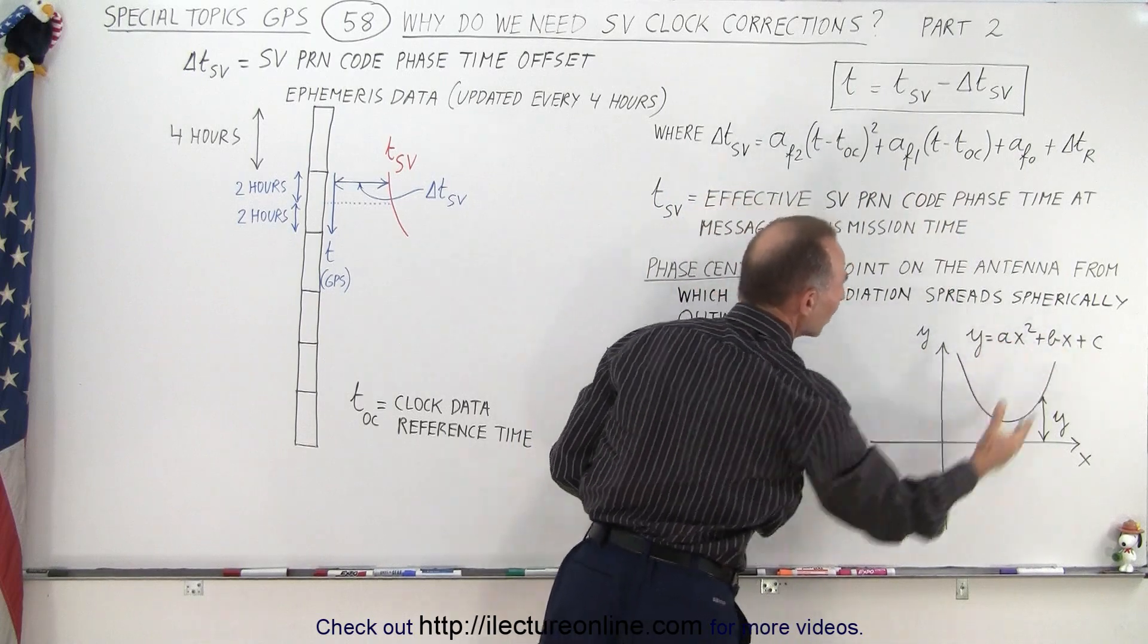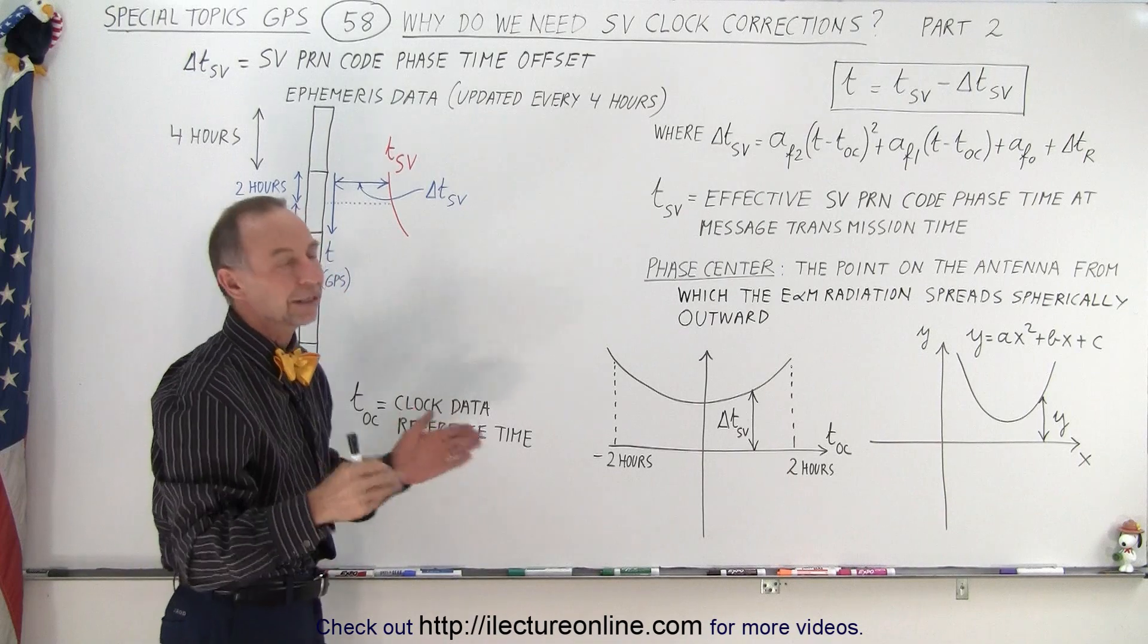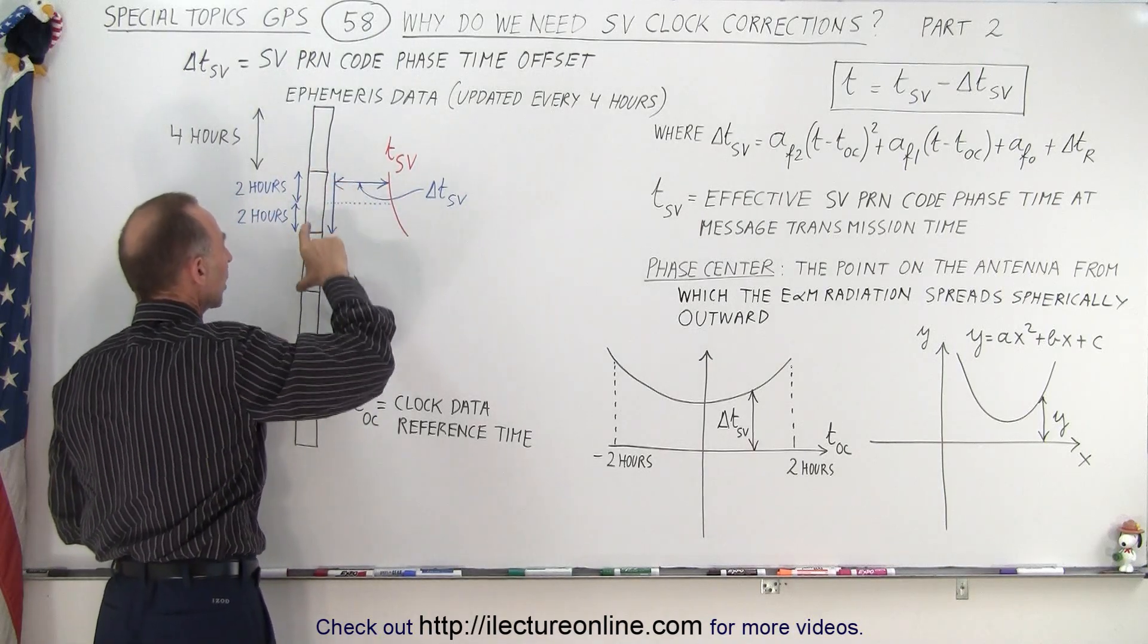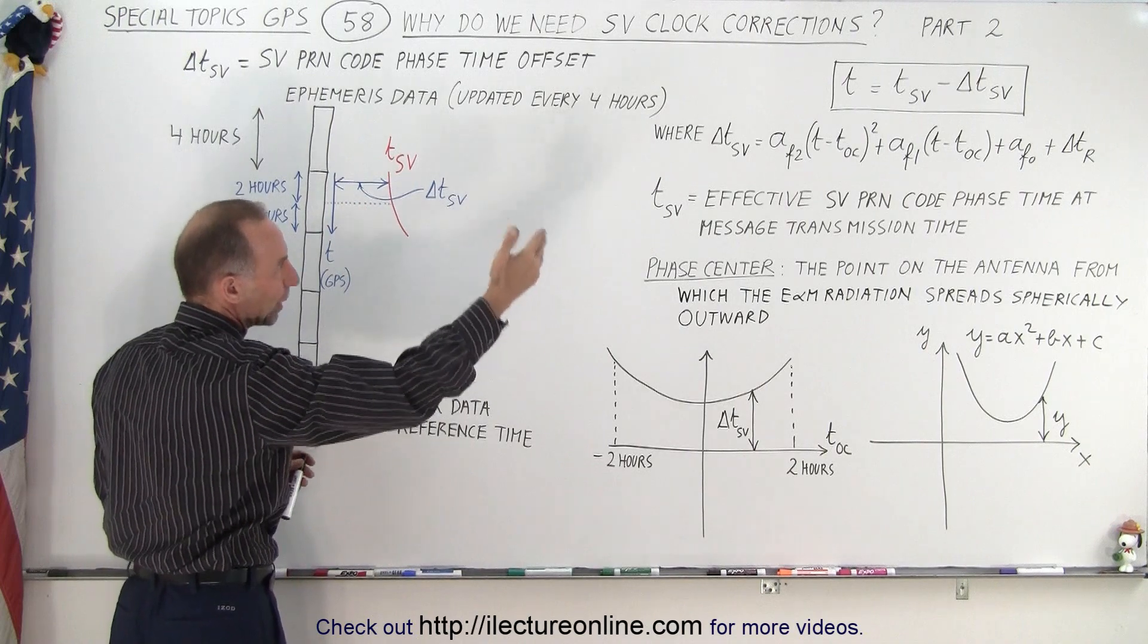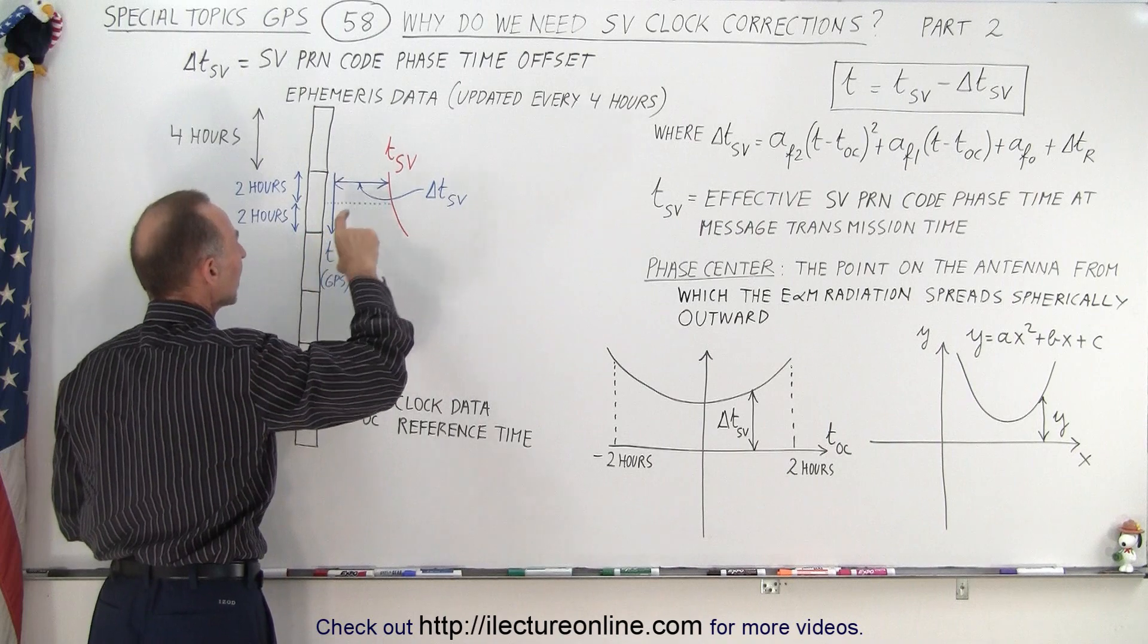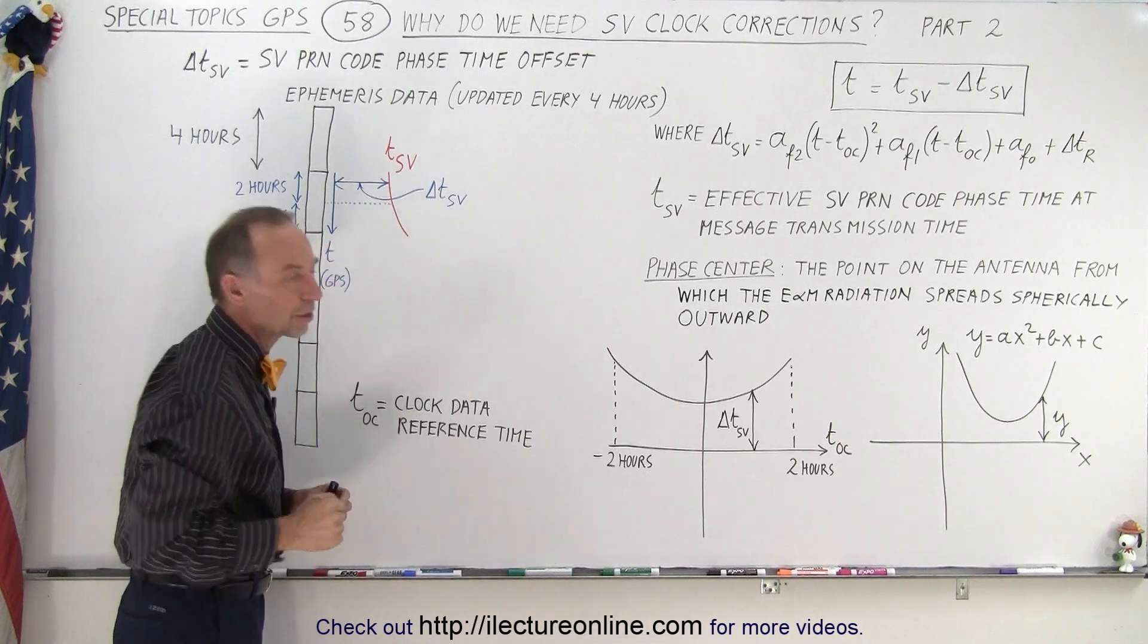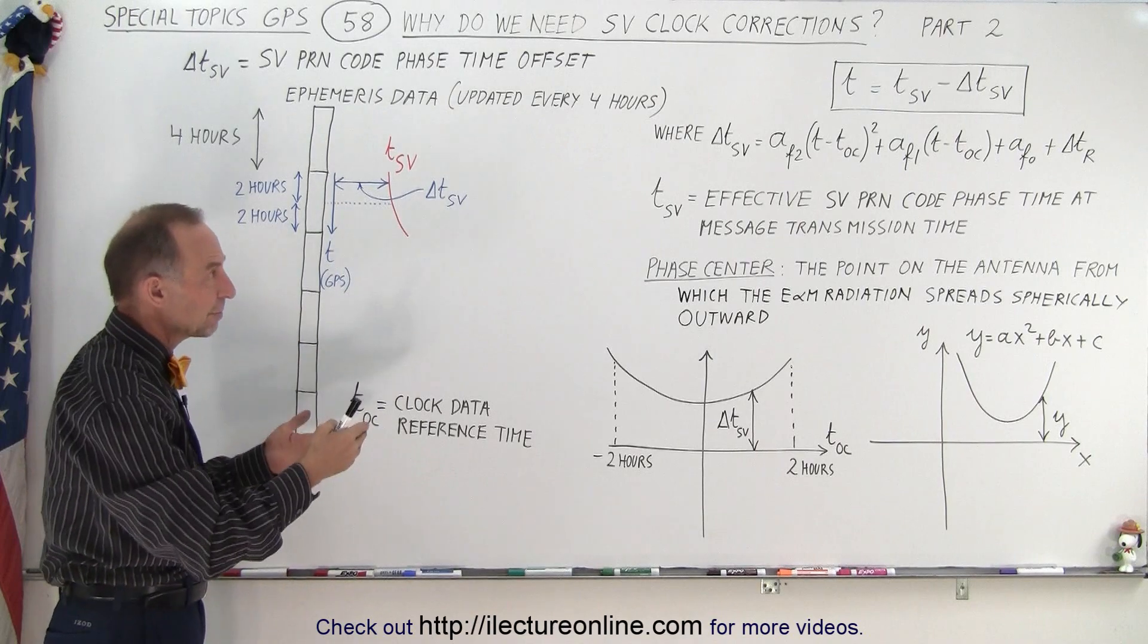We do have to add a delta t for the relativistic effects, and that then gives us the delta t SV. And notice that every block of four hours will have a new set of parameters AF2, AF1, and AF0 to recalculate the difference between the GPS time and the SV time in four-hour blocks.